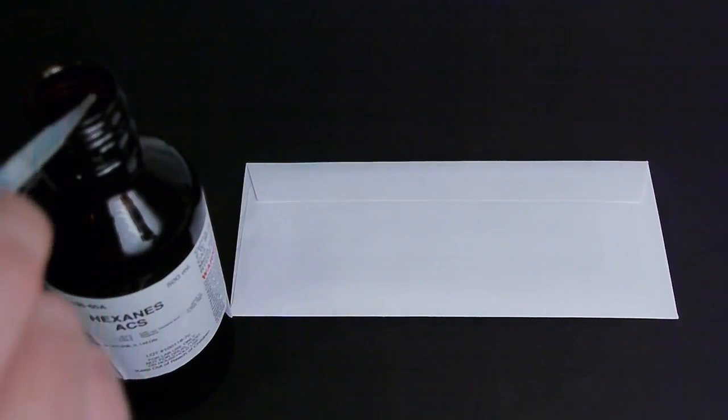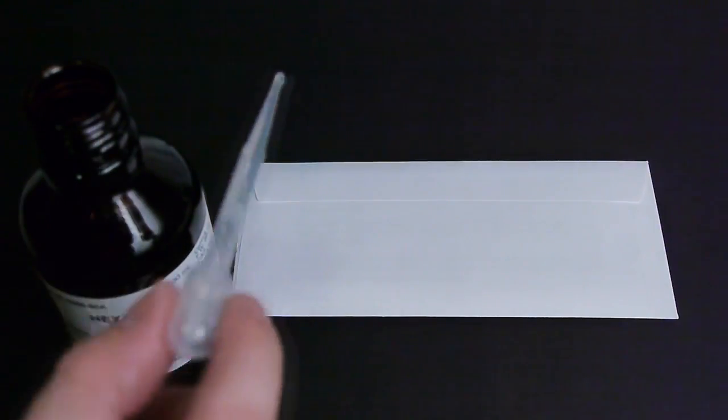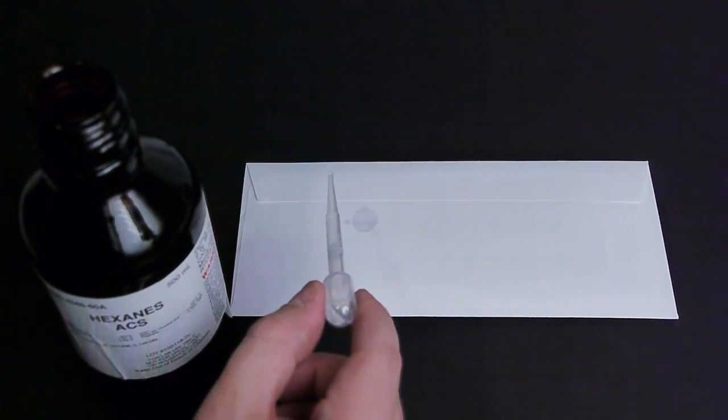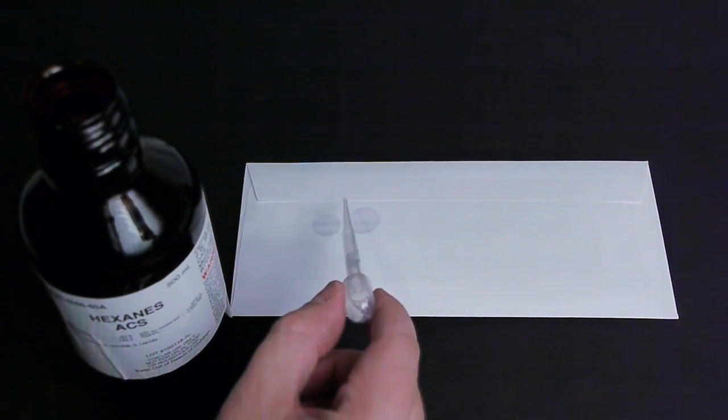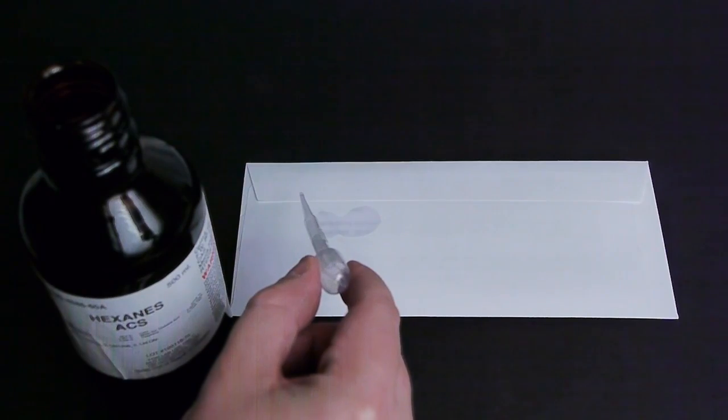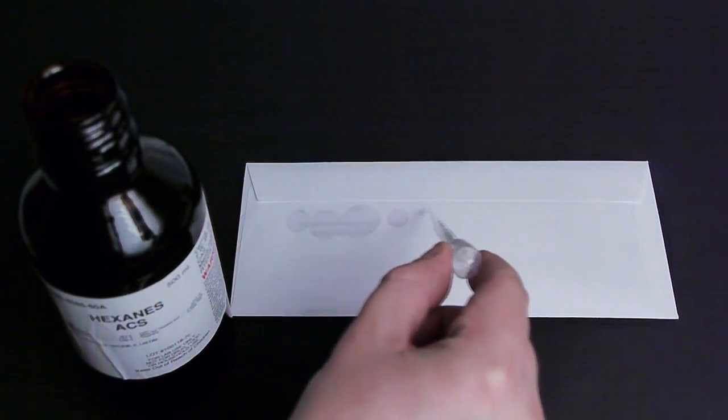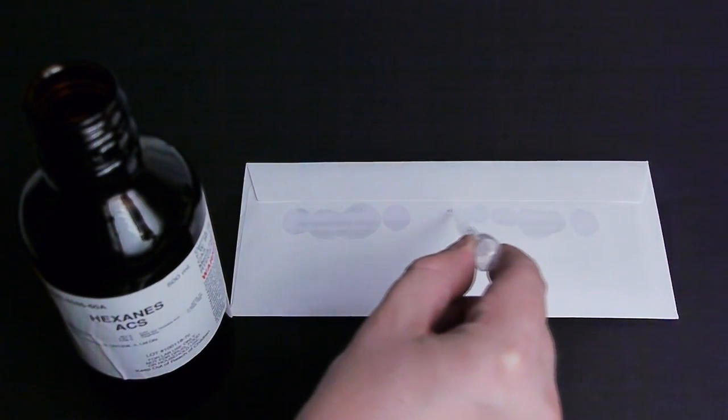This is where our magical friend hexanes jumps in. Surprisingly enough, hexanes are often used to create glues and cooking oils. They are also what you might call a nonpolar solvent. Now, what does that mean? Well, to put it simply...